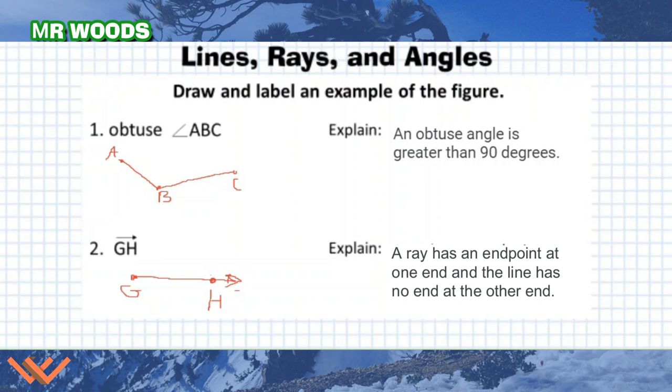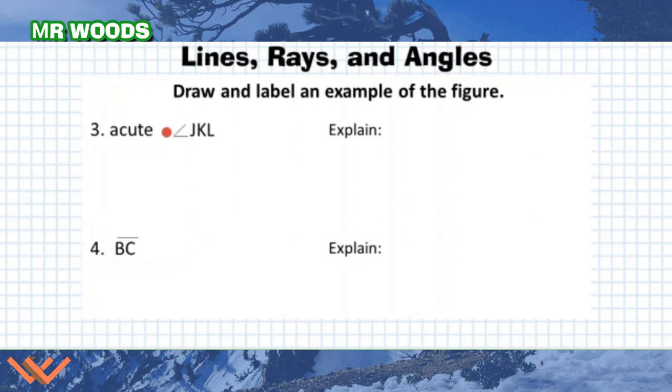Let's look at numbers three and four. Number three reads acute angle JKL. I'm going to draw this right here. I put my points here, and it's J, K, L. How do I explain this? If you recall in the previous video, an acute angle is an angle between zero and 90 degrees. Notice I said between. It does not include zero and 90 degrees. It could be 0.00001. That is an angle.